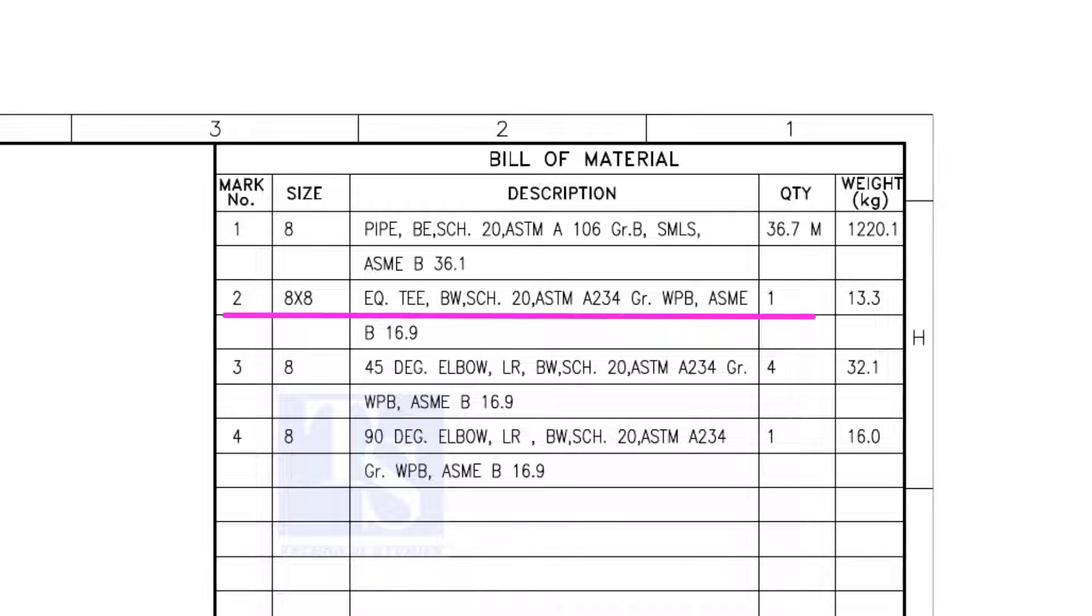What is WPB? W means weldable, P means pressure, B is grade B, refers to the minimum yield strength. Item number 3 is 45 degree long radius elbow. Note that there are 4 numbers 45 degree elbows. Item number 4 is a 90 degree long radius elbow, and the quantity is 1.